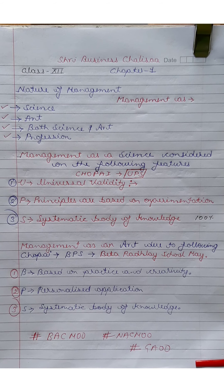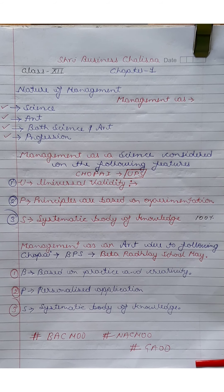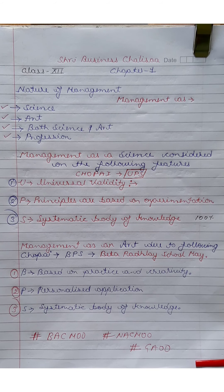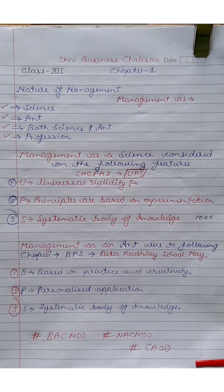BPS — B means Based on Practice and Creativity, P means Personalized Application, S means Systematic Body of Knowledge. Management is an Art because management's theory gives us knowledge — we study it in many books, just like in music. Then we apply it to our business. Management functions are P.O.S.D.C. — you have to apply Planning, Organizing, Staffing, Directing, Controlling. So management works as an art — theory knowledge is given and we apply it. This feature — Based on Practice and Creativity — is 100% applicable to management.